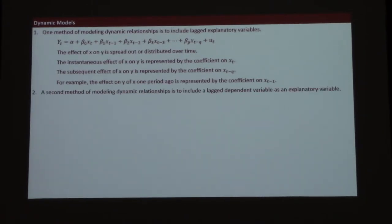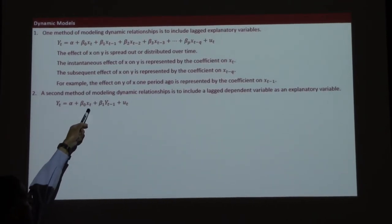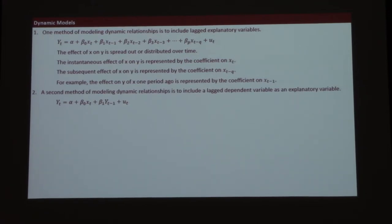A second method of modeling dynamic relationships is including lagged y's. This says sales today depend on advertising today, but also on sales from last period. What this is essentially modeling is: if sales are following a trend, then sales today are probably going to be pretty similar to what sales were last period. So sales are simply following a trend in themselves.